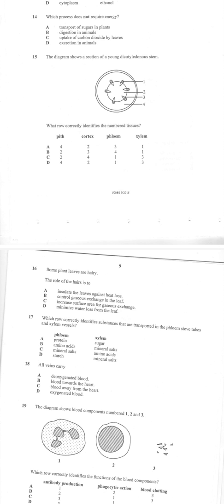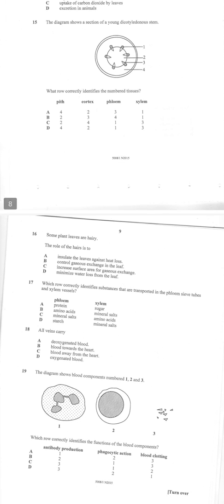Number 15: the diagram shows a section of a young dicotyledonous stem. Most people struggle to identify the phloem and the xylem. Just know that on that ring, your phloem is on the outer side, your xylem is on the inner part.